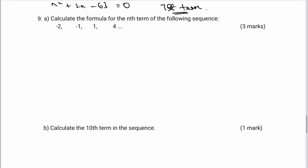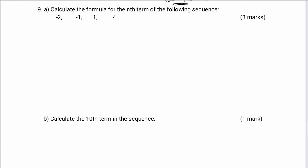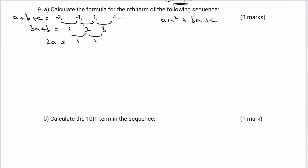Let's look at question 9, using exactly the same idea to calculate the formula for the nth term. Starting with the first line differences: minus 2 to minus 1 is a difference of 1, then 2, then 3. So the second line difference is 1, which equals 2a. Since 2a equals 1, a must equal a half — I'll write this as 0.5n squared.